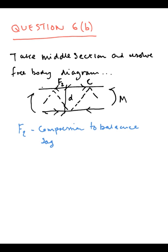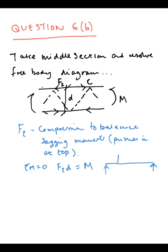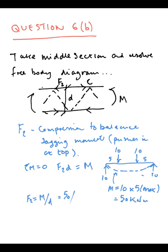So we take the moment, F2 compression to balance the sagging moment. The sagging moment is the moment in the system, this is the beam, so F2 times D is the moment itself. The moment is 10 times 5, 50 kNm. F equals M over D, 50 over 3, the depth gives you 17 kN compression, and likewise the chord in the bottom is in tension.